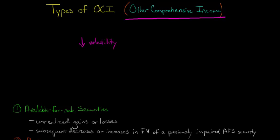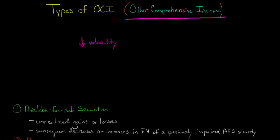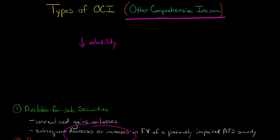Now, if you have taken an impairment on an available-for-sale security — if it's been previously impaired as an other-than-temporary impairment — in that case the loss would have been directly booked and flowed through earnings. If you've already done that, and then later the security increases or decreases in value, then that subsequent decrease or increase in the available-for-sale security also will flow through other comprehensive income.